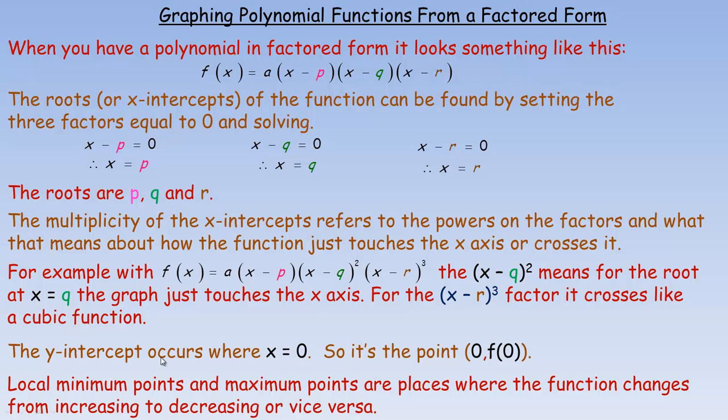The y-intercept occurs for any function wherever x is 0. So if we put 0 in place of x, whatever f of 0 works out to be, that's the y-coordinate, the y-intercept. Local maximum points or minimum points are places where the function changes from either increasing to decreasing or the opposite. A lot of people call them hills or valleys. We'll see some of those in the examples.